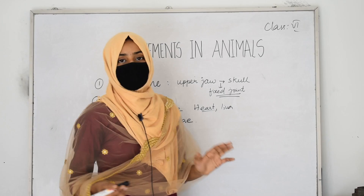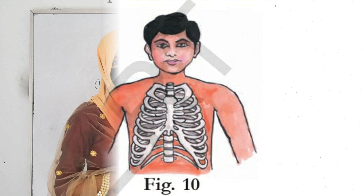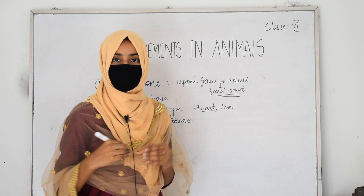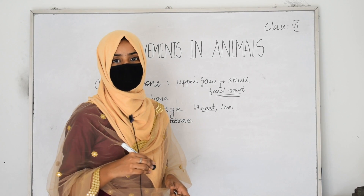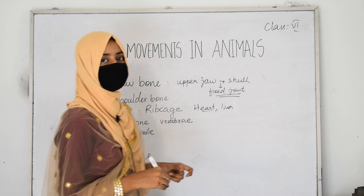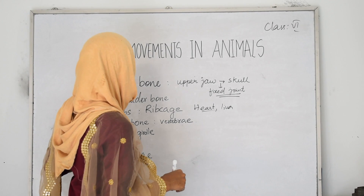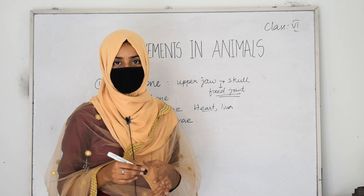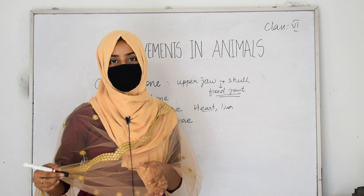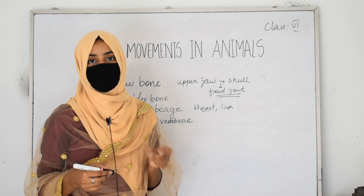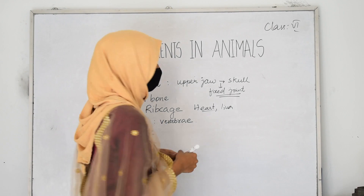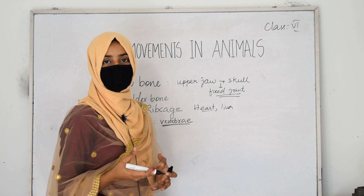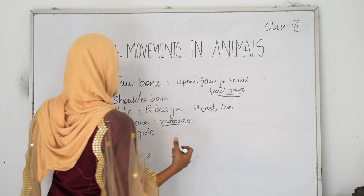The next bone is the backbone, also called the spinal cord. The backbone starts from the neck region and extends towards the waist. This long structure is also called the spinal cord. It is made up of small bones joined together called vertebrae. When the vertebrae join together, they form the long structure we call the backbone or spinal cord.